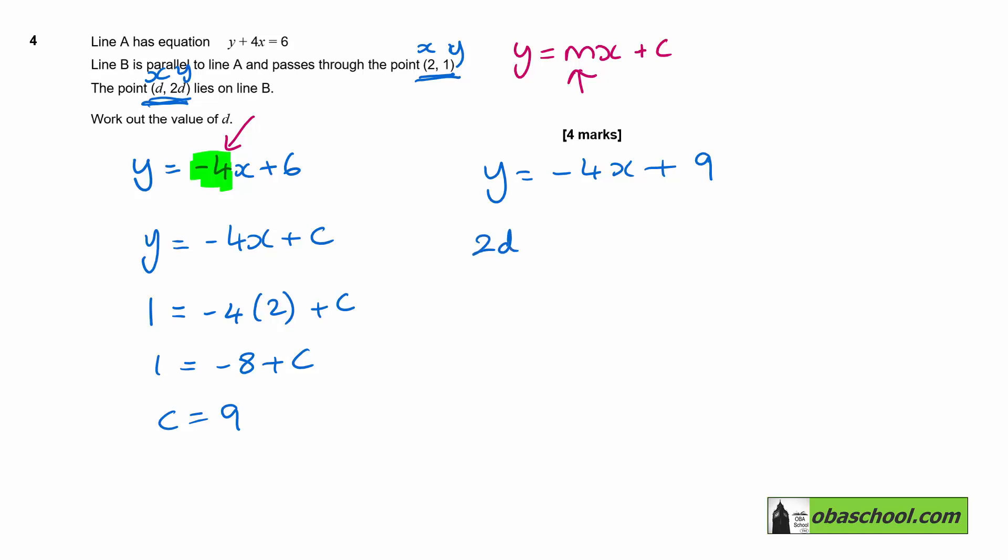So 2d is going to be negative 4d plus 9. That gives me 6d equals 9 and d is therefore 9 over 6. And 9 and 6 both divide by 3 so we can cancel that down to 3 over 2.